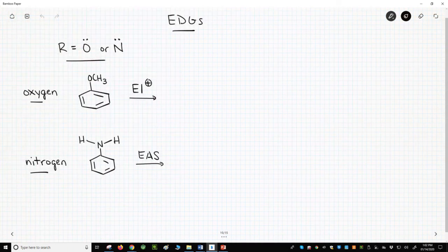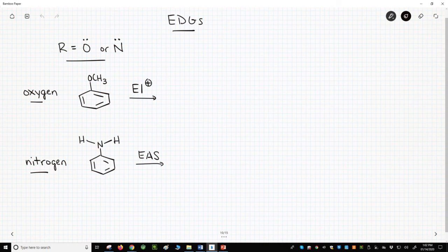The second type of EDG includes oxygen and nitrogen groups. Note that the oxygen or nitrogen must be both directly attached to the ring and have a lone pair.